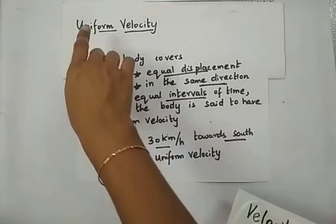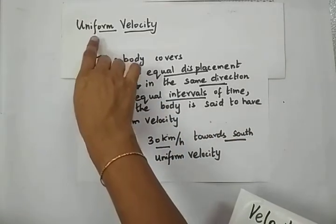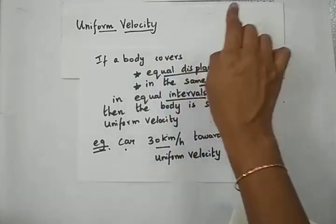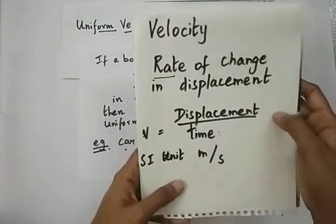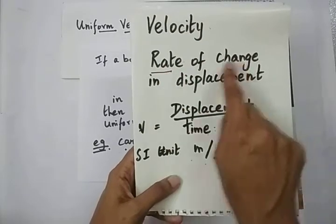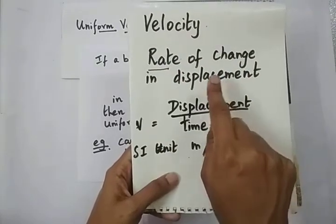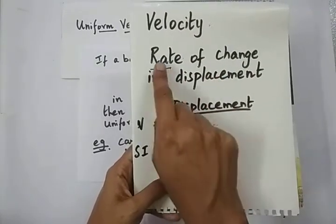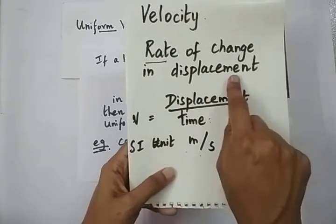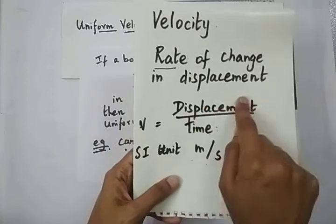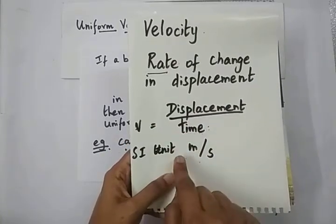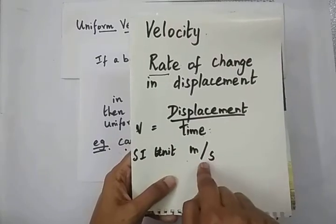In this video we will learn what is uniform velocity and how it is different from non-uniform velocity. We will recall the definition of velocity: velocity is the rate of change in displacement. If a definition starts with the word rate, the quantity should be divided by time, so displacement divided by time gives you the velocity of a moving body, and the SI unit is meter per second.